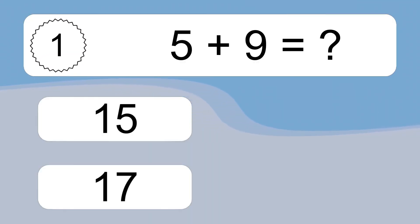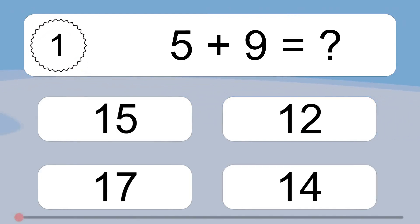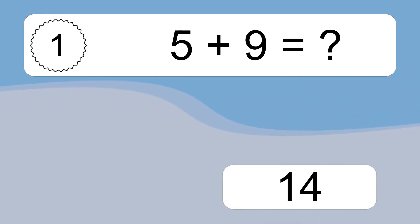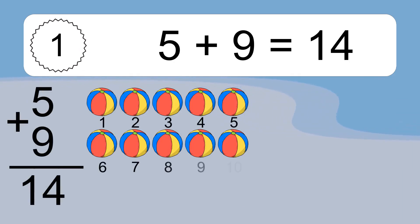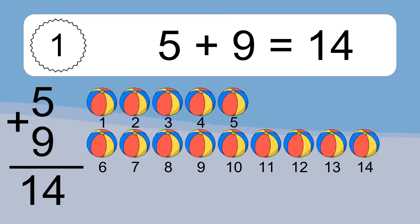5 plus 9 equals what? 5 plus 9 equals 14. Let's count it: 1, 2, 3, 4, 5, 6, 7, 8, 9, 10, 11, 12, 13, 14.